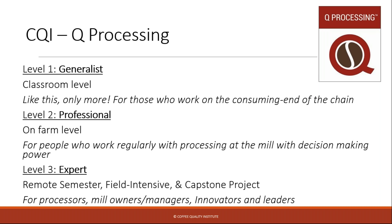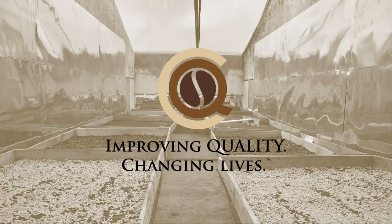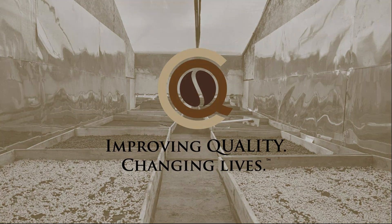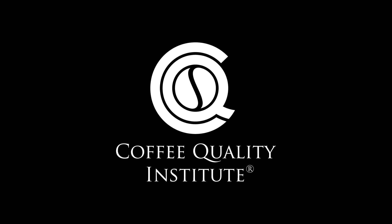The level three is a year-long intensive course with a remote semester, a field intensive, and a project. It's intended for processors, mill owners, managers, innovators, and leaders in coffee processing. Thank you very much for joining me to learn more about pulp and mucilage, and I hope you'll check out our other educational opportunities on our website, as well as more information on the Q Processing and our other curriculums there.